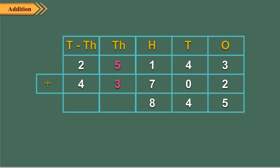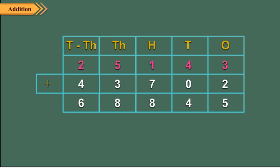Add the thousands: 5 thousands plus 3 thousands is equal to 8 thousands. Write 8 in the thousands place. Finally, add the ten-thousands: 2 ten-thousands plus 4 ten-thousands is equal to 6 ten-thousands. So we write 6 in the ten-thousands place. So, 25143 plus 43702 is equal to 68845.